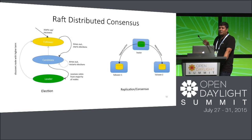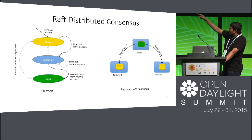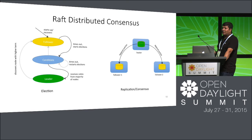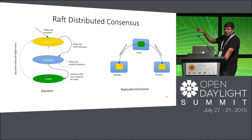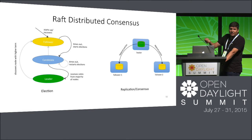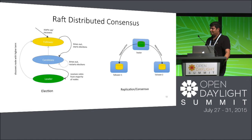Once you become a leader, you have the authority to replicate data to other nodes. The leader sends append entries messages, which serve both as a heartbeat and as a way to replicate data. For consensus: in a three-node cluster with one leader and two followers, you need to replicate to at least one follower and receive confirmation before you can commit the data to the tree. If you don't get that response, the data stays in your journal and is never applied to the tree.